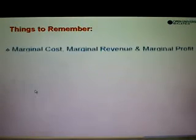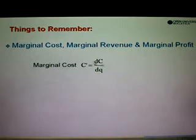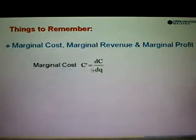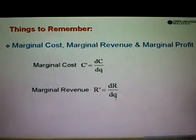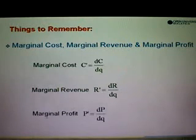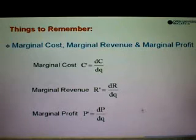In order to find the marginal cost, marginal cost is denoted by C dash, which is obtained by differentiating cost compared with Q. So marginal cost is equal to DC over DQ. The same goes for marginal revenue, so marginal revenue is equal to DR over DQ. And for marginal profit, we obtain it by differentiating profit compared with quantity, so DP/DQ is equal to marginal profit.